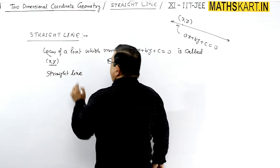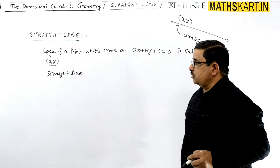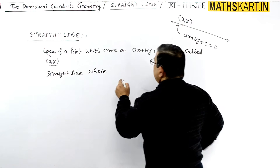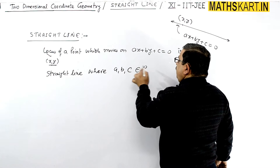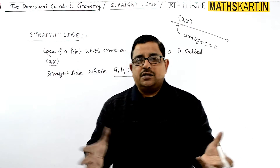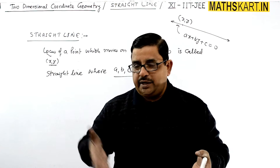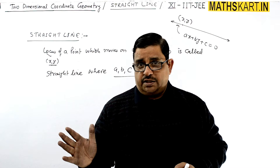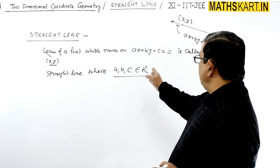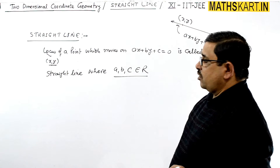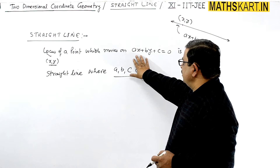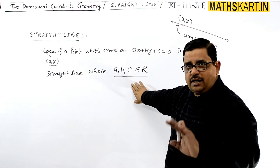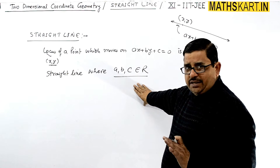For the definition of the straight line, where a, b, c belong to real numbers — they must be real numbers, otherwise the line won't be real. The line is real, so the coefficients a, b and the constant c are real constants. These are the coefficients of x and y, and c is the pure constant term.